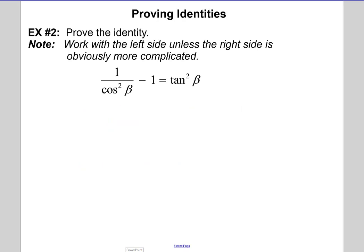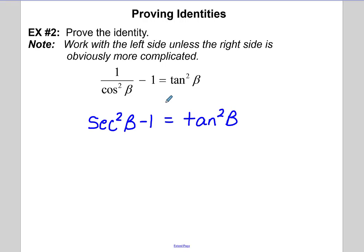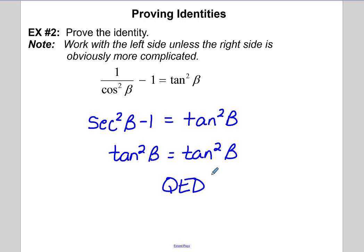So that was an algebraic approach. In the second example we want to work with the left side, unless the right side is obviously more complicated. Here you can see the left side is the more complicated. The quotient reciprocal identity for cosine squared on the bottom could be rewritten as secant squared on the top. And secant squared minus 1 is one of our Pythagorean identities — it's another name for tangent squared. And tangent squared is equal to the right-hand side, so we've proven that.